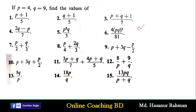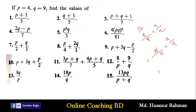Now number 12 says 8/p + 9/q. The value of p is 4 and the value of q is 9. If we divide 8 by 4 we get 2, and 9 by 9 is 1. So 2 plus 1 equals 3. That is the answer of number 12.